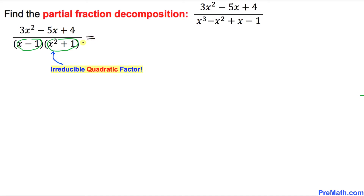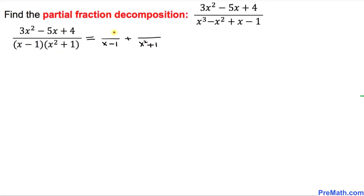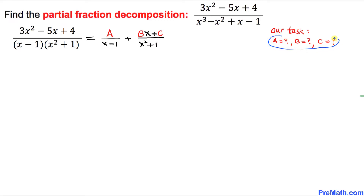Since we have two factors we are going to have two fractions, separated by a plus sign. The first fraction has x minus 1 in the denominator and the second has x squared plus 1. For the numerators: the first linear factor gets constant A, and the quadratic factor gets Bx plus C. Our task is to find the values of constants A, B, and C.